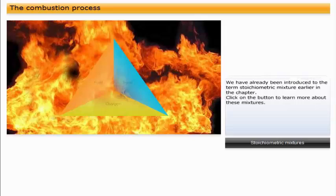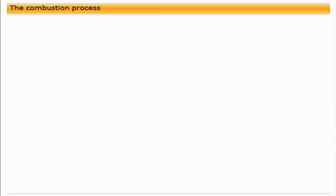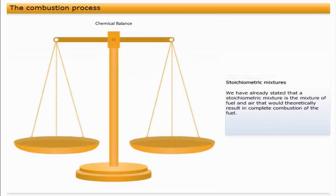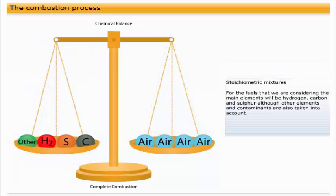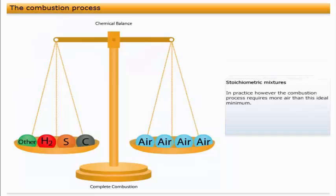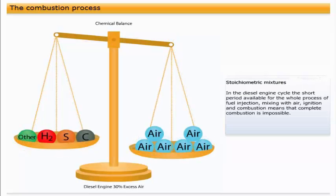We have already been introduced to the term stoichiometric mixture earlier in the chapter. A stoichiometric mixture is the mixture of fuel and air that would theoretically result in complete combustion of the fuel. The amount can be calculated by considering exactly how much air is required for the complete combustion of each of the elements within the fuel. For the fuels that we are considering, the main elements will be hydrogen, carbon, and sulfur, although other elements and contaminants are also taken into account. In practice, however, the combustion process requires more air than this ideal minimum.